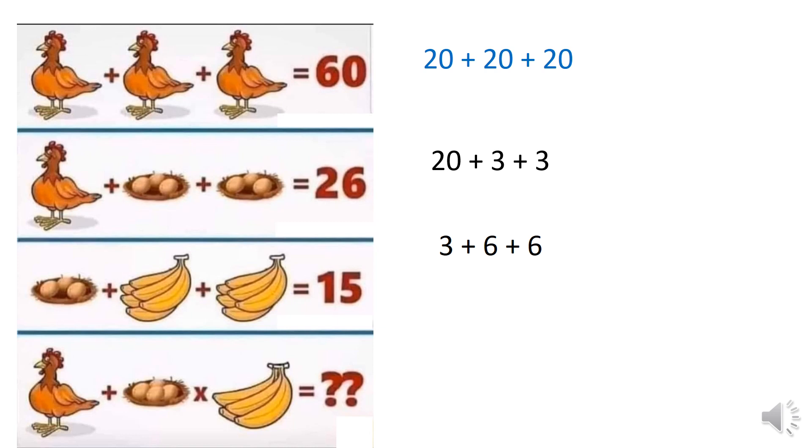And the last row is the tricky row. We have the chicken which is 20 as indicated on the first row. Instead of having three eggs in the nest, in this row we actually have four, one, two, three, four eggs in this nest. And instead of having six groups of bananas we only have one, two, three, four bananas.